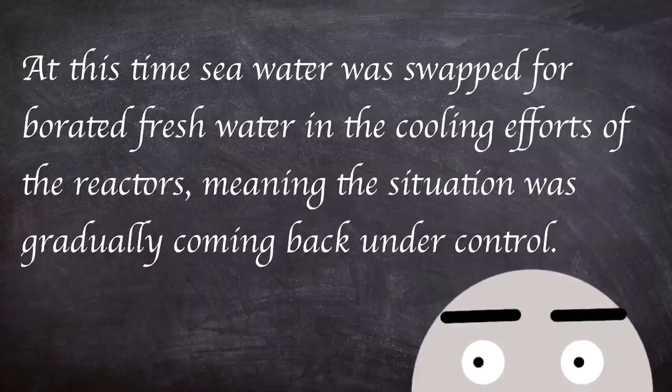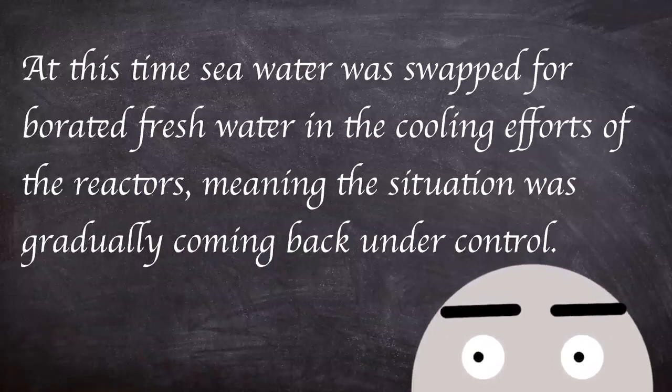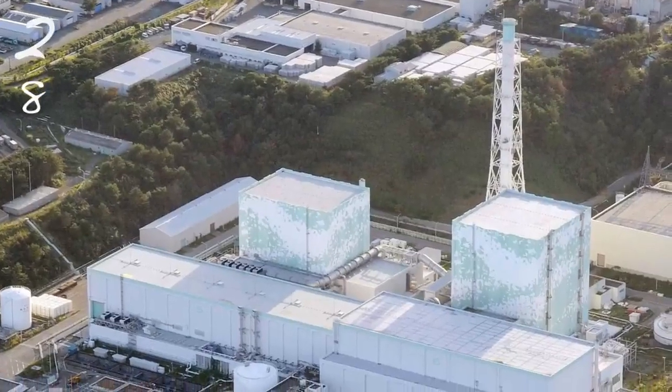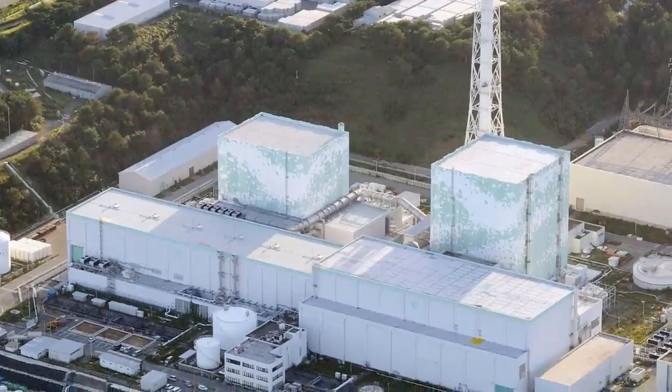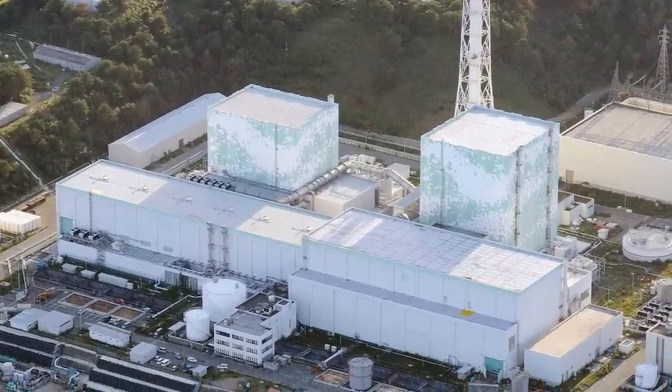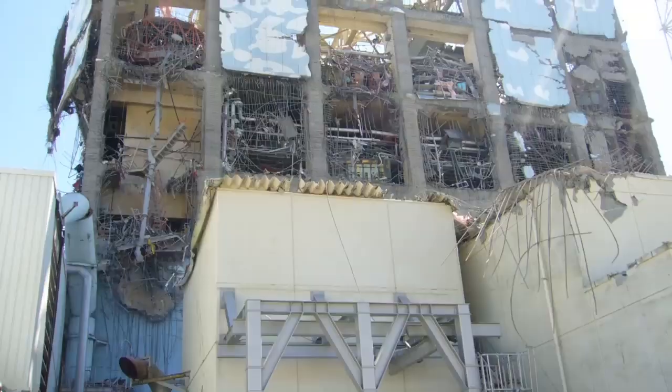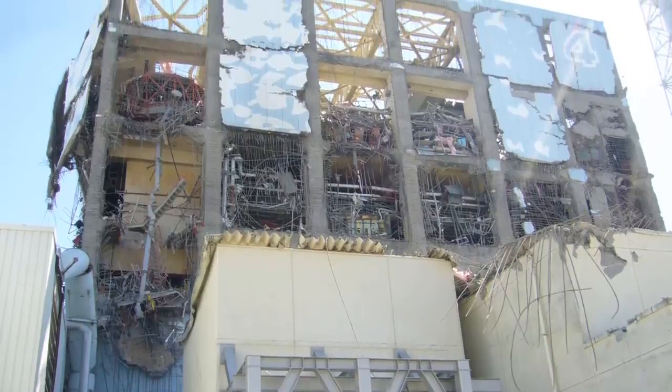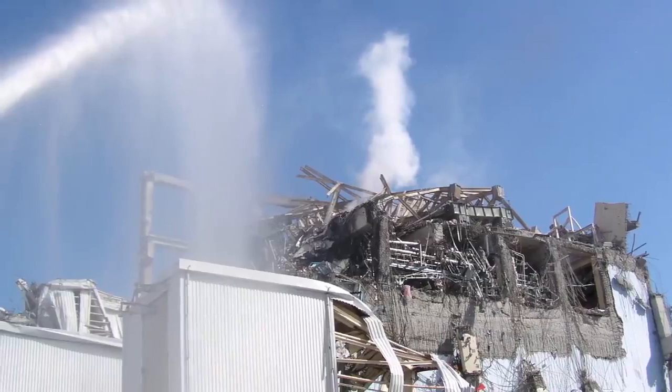At this time, seawater was swapped for borated fresh water in the cooling efforts of the reactors, meaning the situation was gradually coming back under control. Unit 5 was the first to be put into cold shutdown mode at 14:30 on the 20th of March 2011. This was followed by unit 6 at 19:27 on the same day. However, the remaining units had a long journey ahead as a more stable situation was achieved in April 2012.